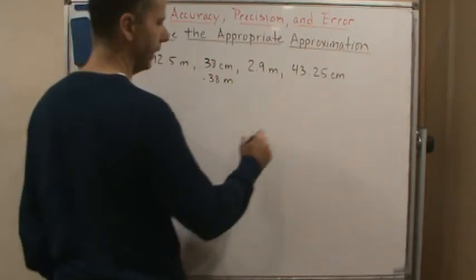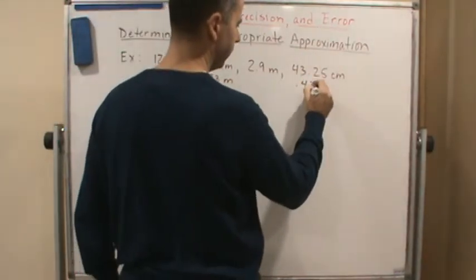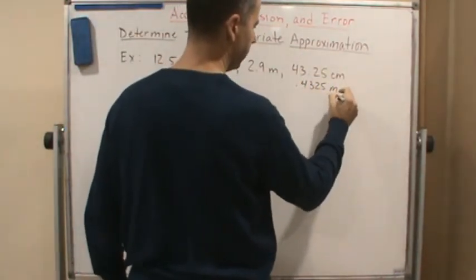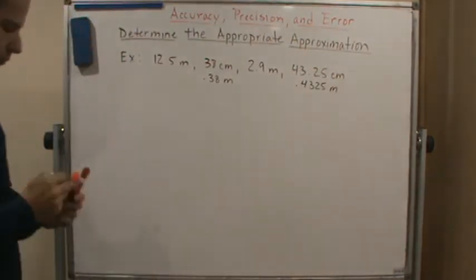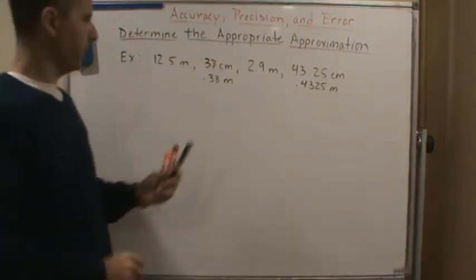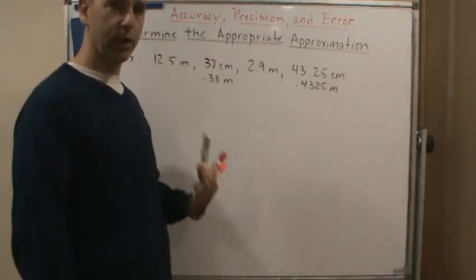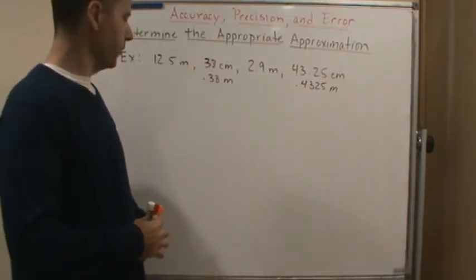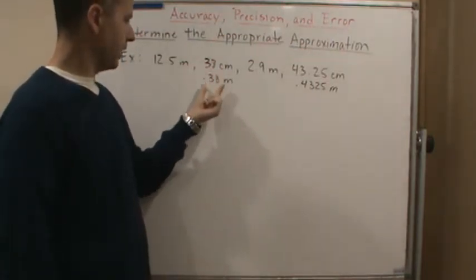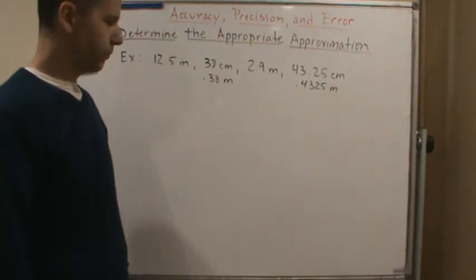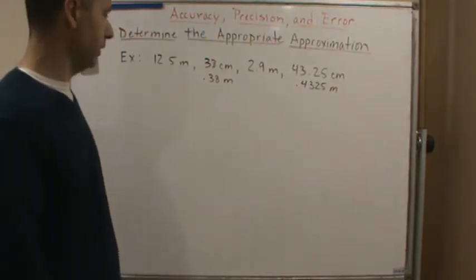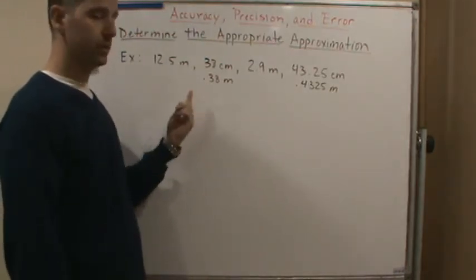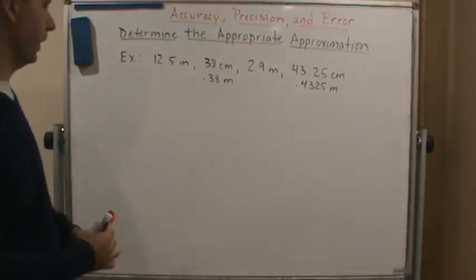And this is going to be 0.4325 meters. So remember centimeters is one one hundredth of a meter. So 38 centimeters would be the same as 0.38 meters. We just move the decimal point to the left two spots.